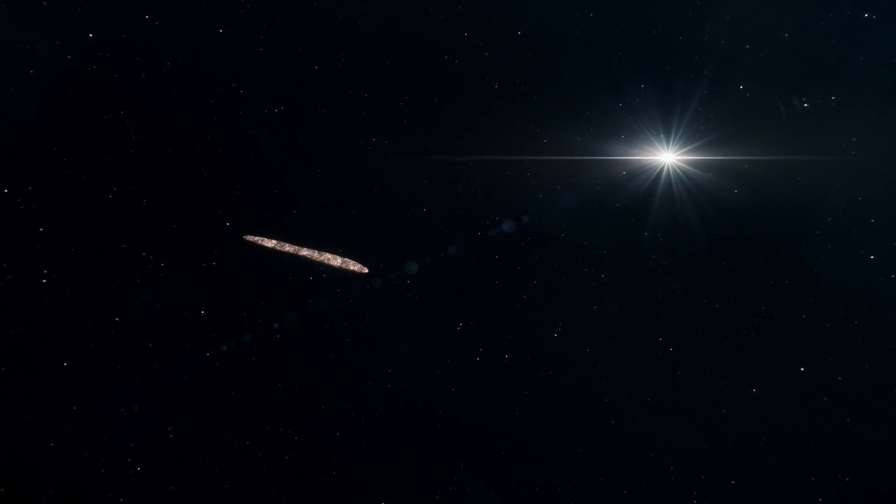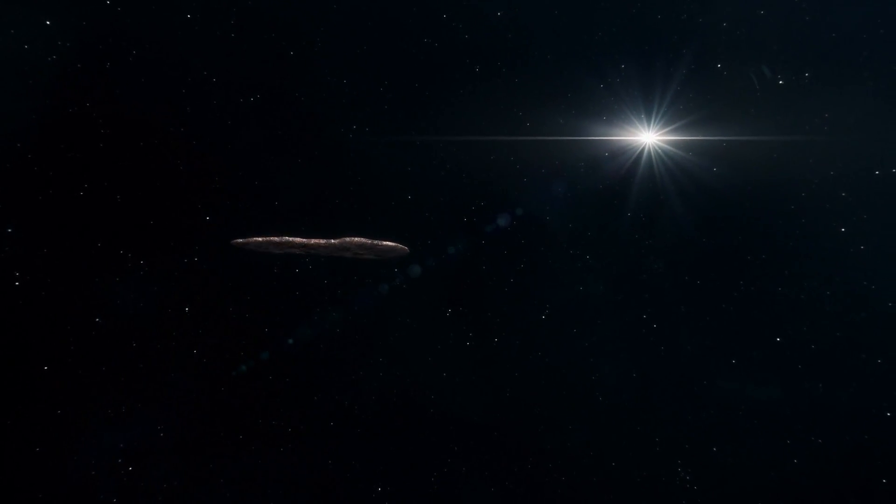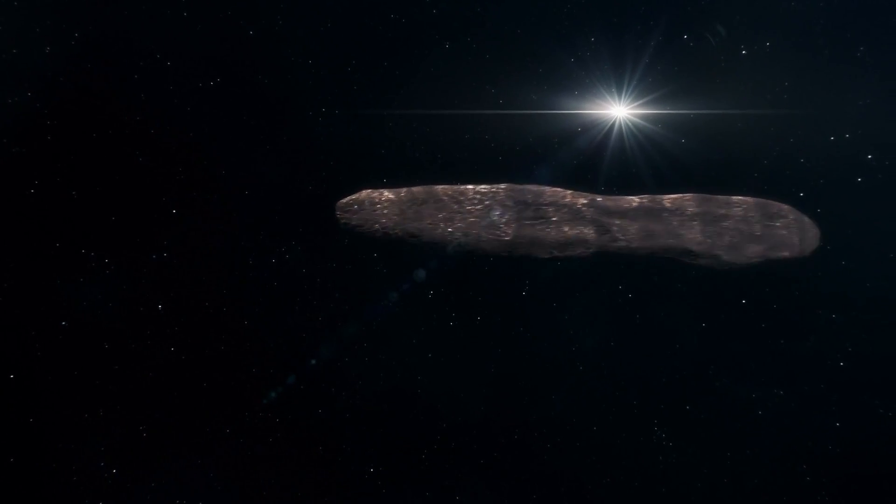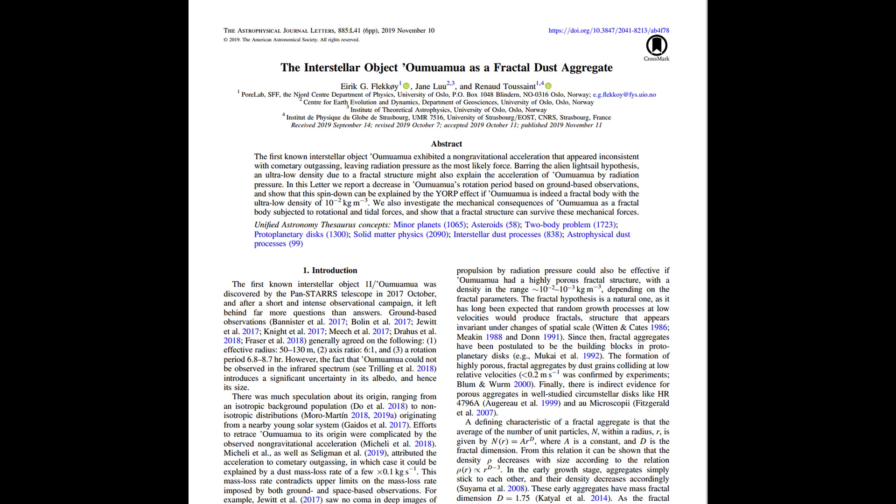The first known interstellar object, Oumuamua, entered our solar system in 2017 and has been a mystery ever since. Theories of its origin abound, including alien. The most likely origin is natural, as described in the recent publication. In the following, we elaborate on this fractal dust scenario and suggest that Oumuamua may actually be a source of cosmic dark matter.